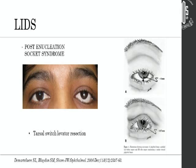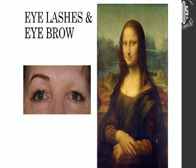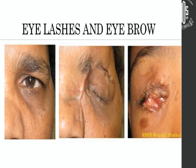Coming to eyebrows and eyelashes, which are important — this case with an obvious eyebrow problem was actually a traumatic dog bite. Just putting in a prosthetic eye or reconstructing the socket won't help; you need to take care of the lashes here, which are totally gone or discontinuous on the medial aspect.